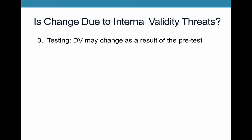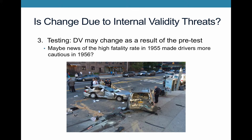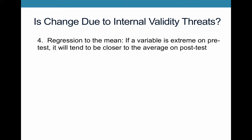Third internal validity threat could be testing. So the dependent variable might be changing as a result of a pre-test, that there is this interaction of testing and the treatment. So maybe news of this high fatality rate in 1955 broke. There are a lot of stories that are written about it. And it made drivers much more cautious in 1956. So you're going to see rates fall because drivers are going to be engaging with more caution. Not because they're worried about losing their licenses, but simply because they know they don't want to die.